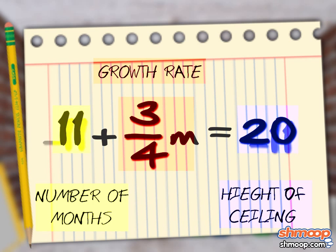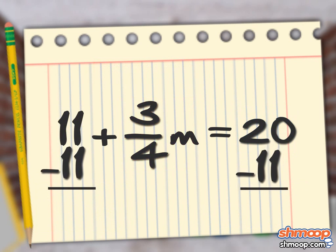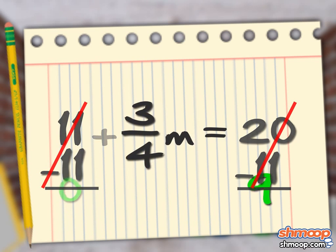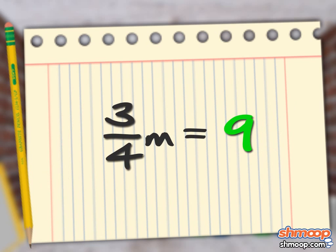First, we need to subtract 11 from each side to simplify this thing. That leaves us with three-fourths M on the left and nine on the right.